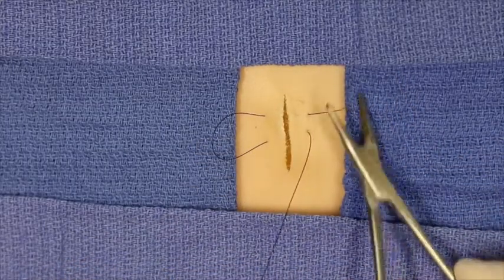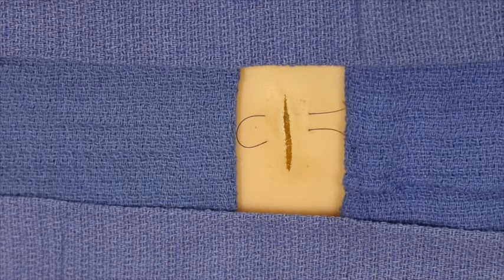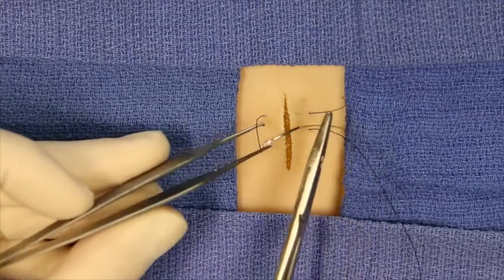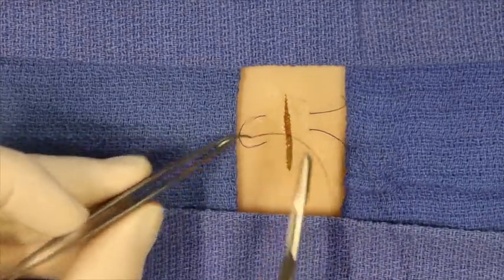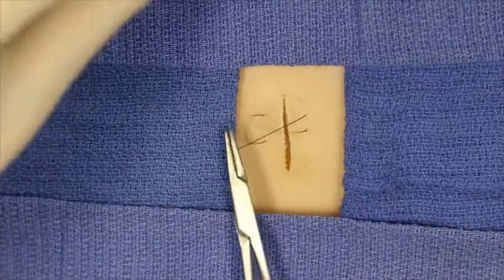In order to lock the suture there are two approaches that have been advocated. One is to simply take the needle, pass it under the loop, pull through, and then tie the suture.